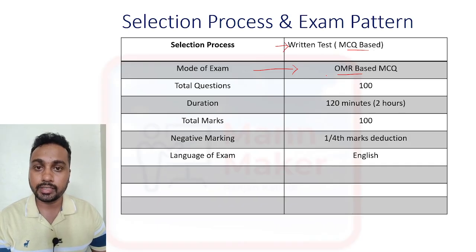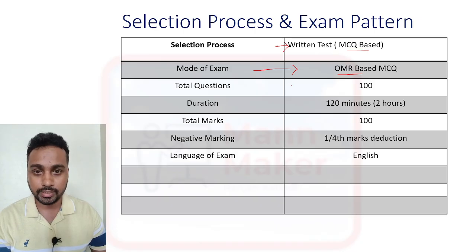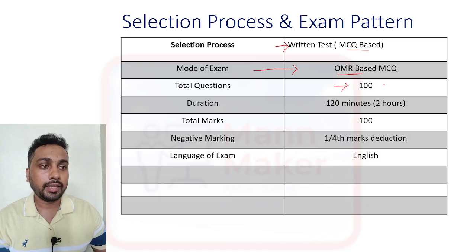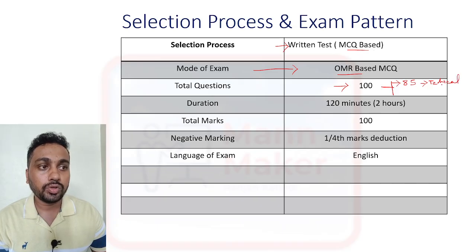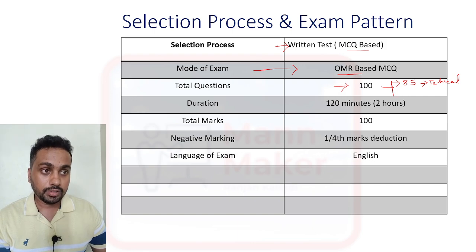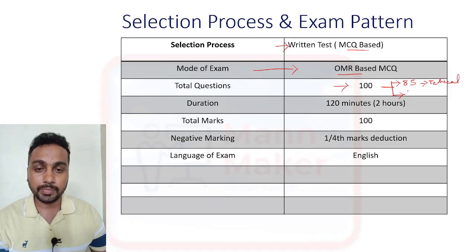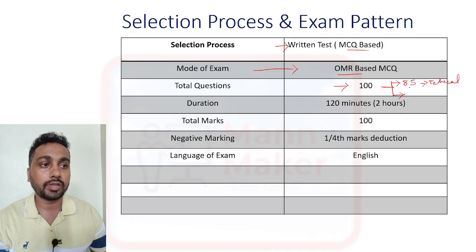At the exam center, you will get an OMR sheet where you need to fill in your answers. This is not a CBT exam. You will get a total of 100 questions. Out of 100, you will get 85 questions from technical subjects — related to software, computer branch, or BSC — whatever branch you have applied for.